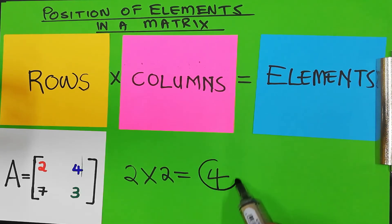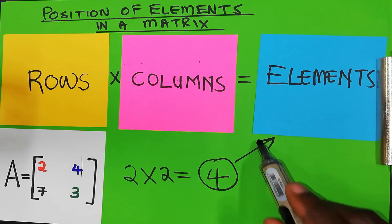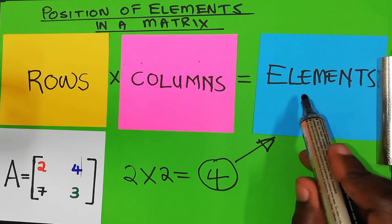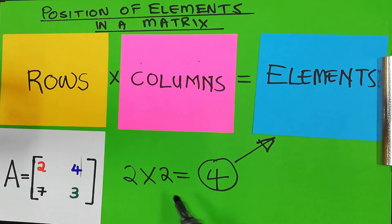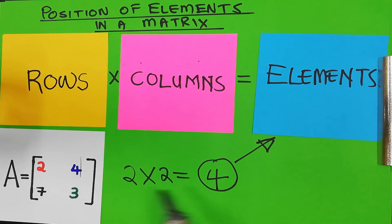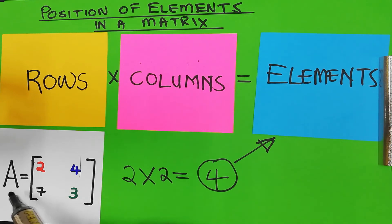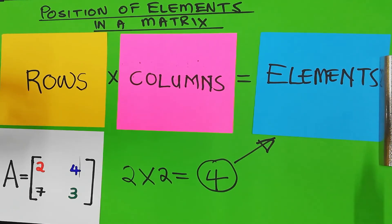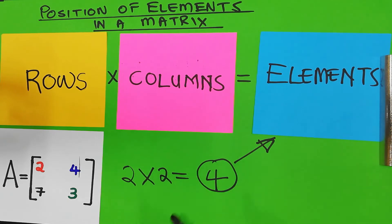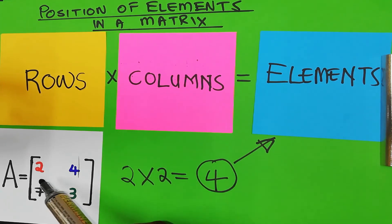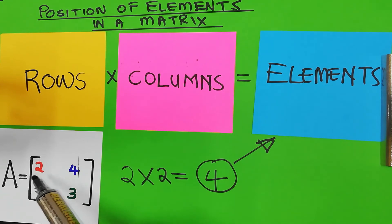Four is the number of elements in this matrix. So there are one, two, three, four elements in matrix A. Now what I want us to talk about is how you determine the position of each element in this matrix.